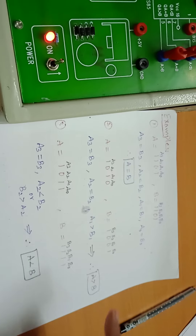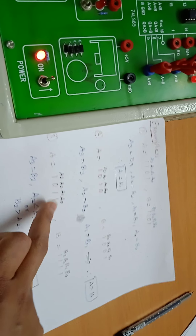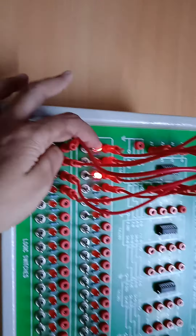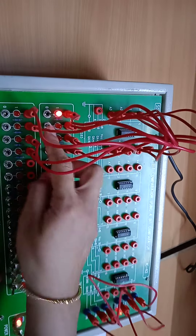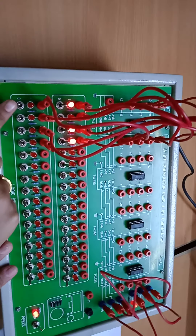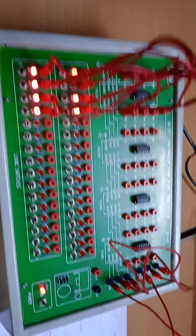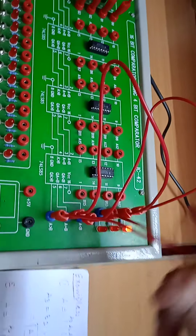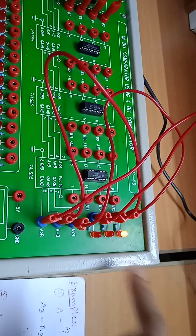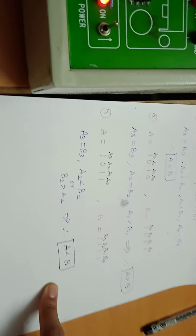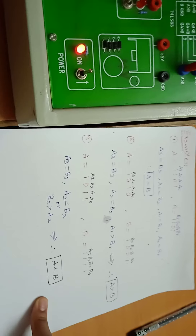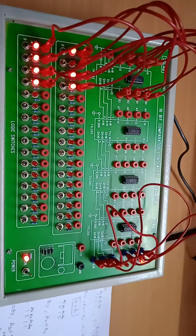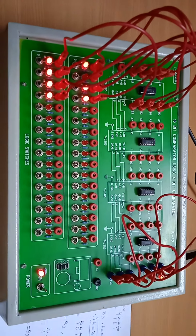Third example: verifying A = 1, 0, 1, 1 and B = 1, 1, 1, 1. Setting the switches, you can see the LED corresponding to A less than B is glowing, confirming the output is A less than B — the same as our theoretical calculation. This is how you can verify all three combinations: A equal to B, A greater than B, and A less than B. This is all about the 4-bit magnitude comparator experiment.